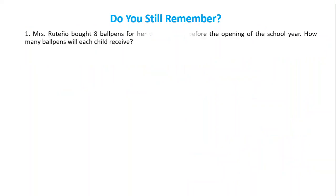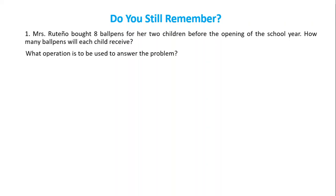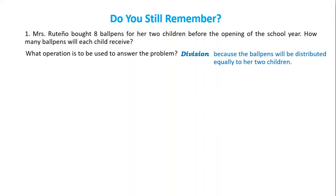Do you still remember? Let's solve. Mrs. Rutenio bought eight ballpens for her two children before the opening of the school year. How many ballpens will each child receive? What operation is to be used to answer the problem? Of course, division — because the ballpens will be distributed equally to her two children.